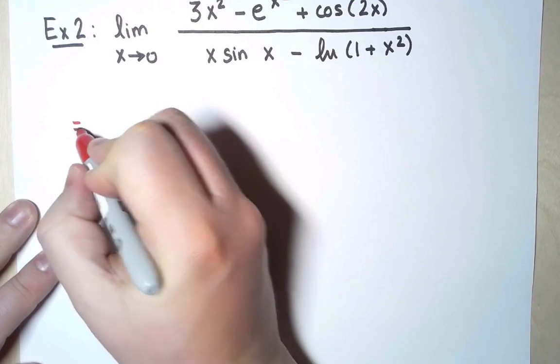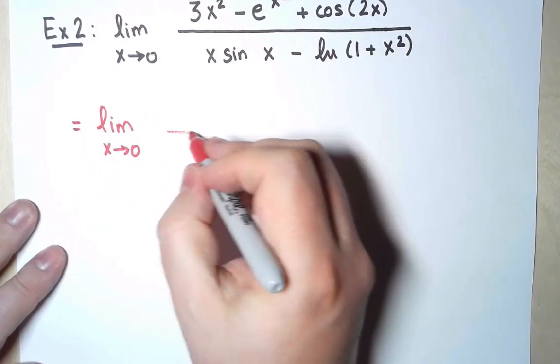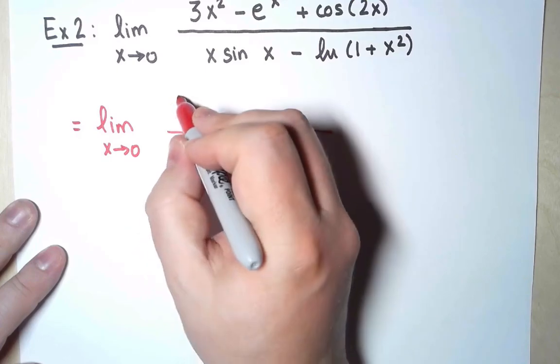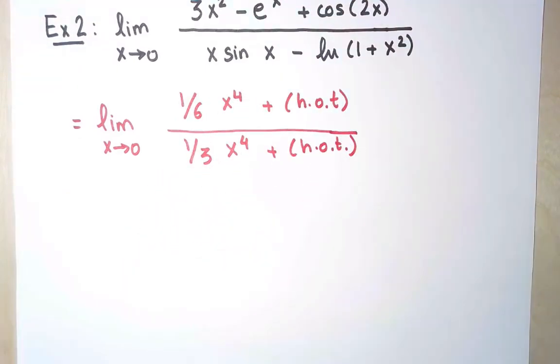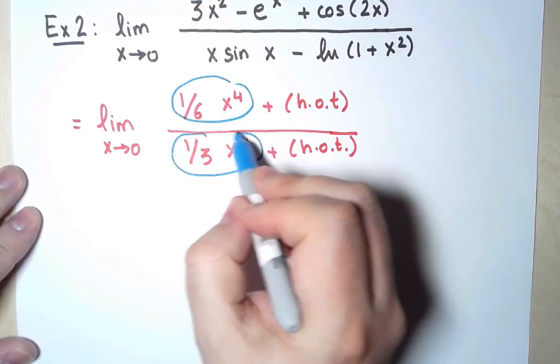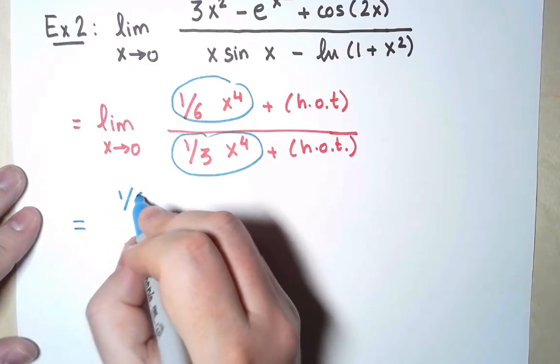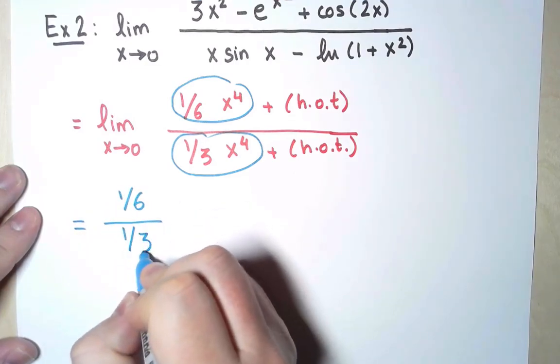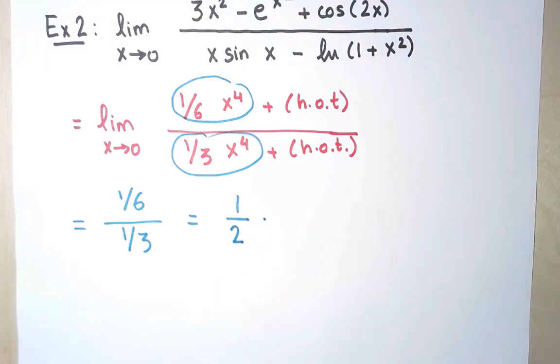I will copy what I have. I will replace both the numerator and the denominator with the first term of the corresponding power series. And like in the previous examples, the only thing that matters is what these two coefficients are. That's why you don't need to know those higher-order terms. So this limit is going to be 1/6 divided by 1/3, which simplifies as 1/2, which is the final answer.